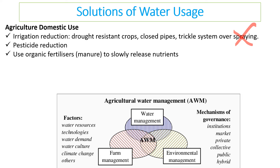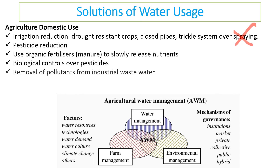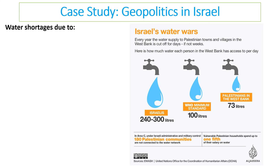Using organic fertilizers such as cow or horse manure releases nutrients slowly and prevents excess from entering and degrading the water. We can use biological controls instead of pesticides, remove pollutants from industrial wastewater to improve water quality, and prevent warm water from being released by power stations by storing it until it has cooled before releasing it.